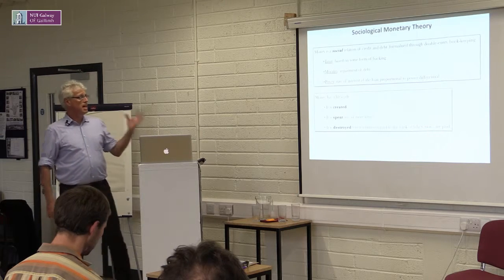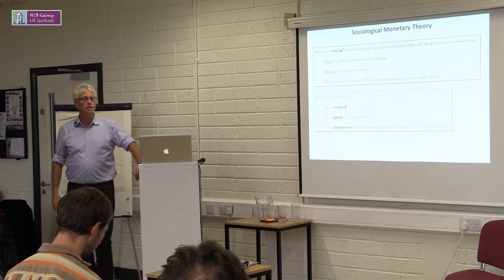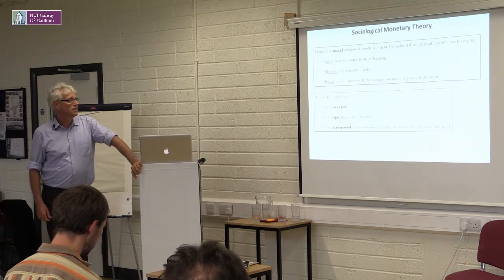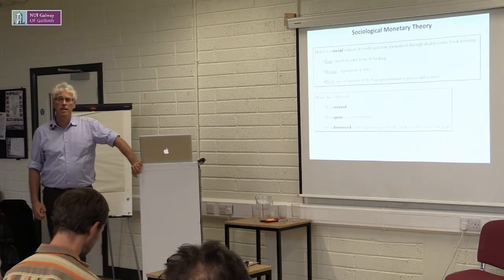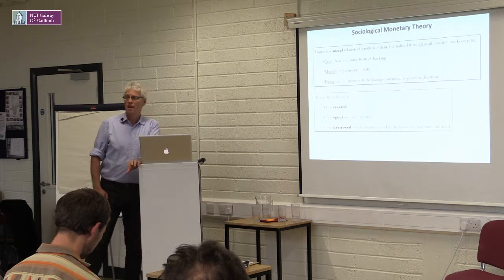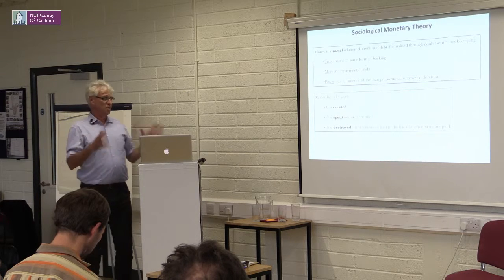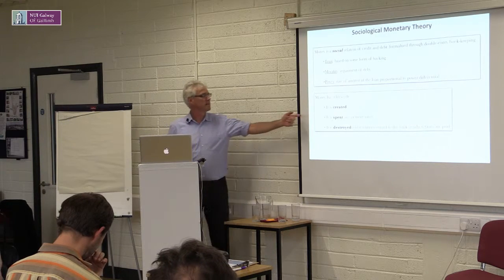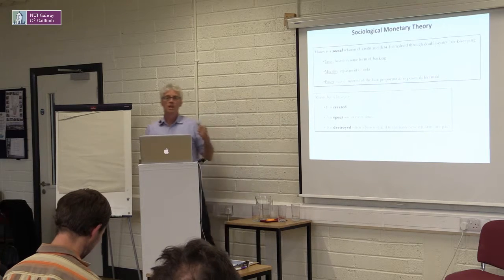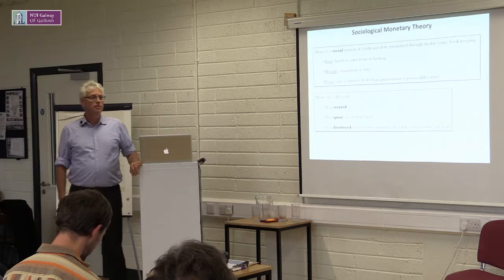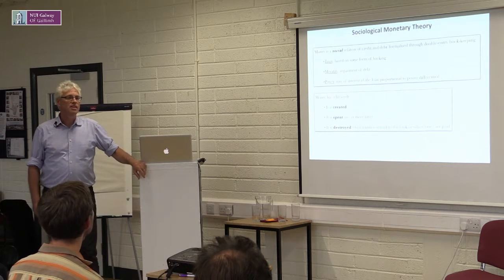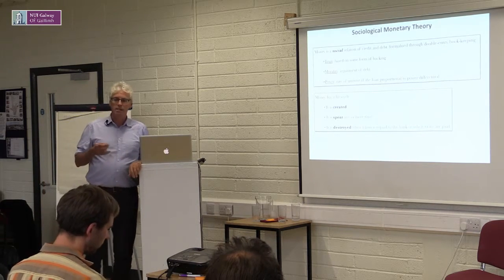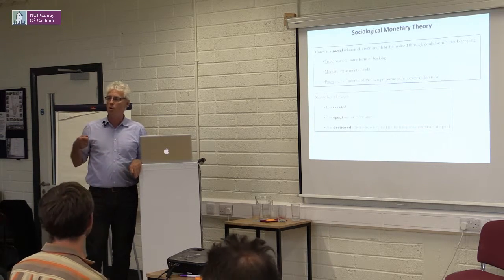Interestingly, money has a life cycle — most neoclassical economists would disagree with that. But we can say that money is created, it is spent one or more times, and then it is destroyed when a loan is repaid to the bank or when taxes are paid. The number of times it is spent between its creation and its destruction is called the velocity. The velocity of the euro is about 1.5. The velocity of Sardex is about 12. Complementary currencies get spent a lot more before they're destroyed.